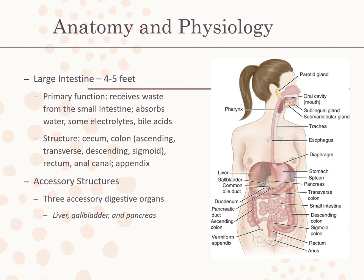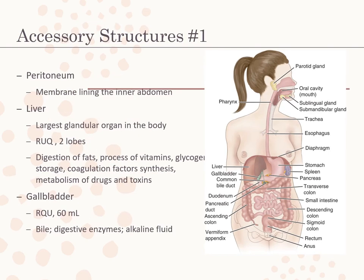The three accessory digestive organs are the liver, gallbladder, and pancreas. Although not an accessory structure itself, the peritoneum encloses the abdominal organs. The peritoneum is a membrane lining the inner abdomen that encloses the viscera and secretes serous fluid, allowing abdominal organs to move without friction. Any perforation allowing material to seep out of the digestive tract is serious because microorganisms and enzymes can cause severe inflammation and infection of surrounding tissue — a condition known as peritonitis.